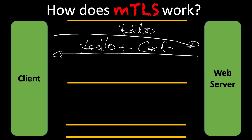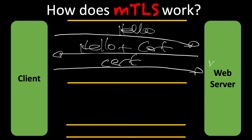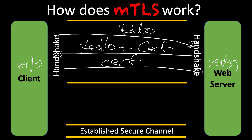But with MTLS, the client is now also sending over its certificate. What's actually happening is the web server is verifying this certificate, just like the client verified the certificate a little bit earlier on. That is essentially the key difference between MTLS and TLS — now we're authenticating both sides. And this is happening at the handshake level, where we're exchanging back and forth the certificates and all that kind of good stuff.